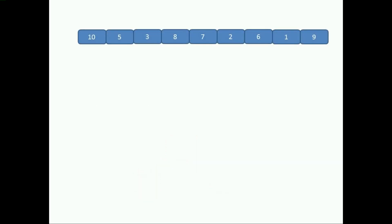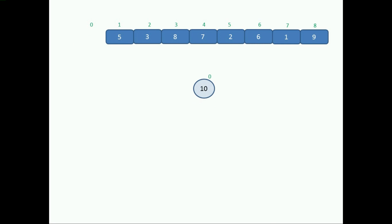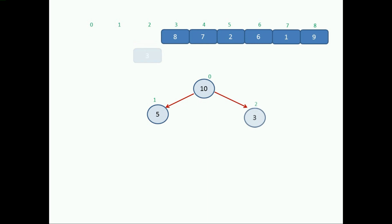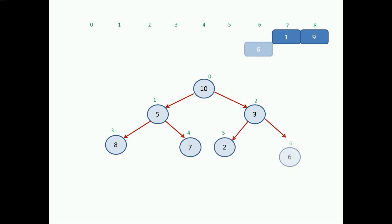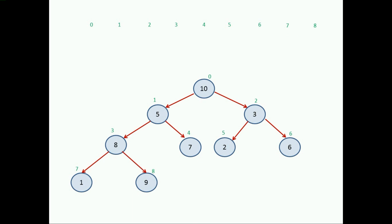I am taking an example with nine elements in unsorted order, and we are going to sort it using the heap sorting method. The first step is to create a heap — a tree — from our unsorted list. The first element is 10 at index position 0, then 5, then its right child 3, then 8, 7, 2, 6 at index 6, 7, and the last element at index 8 is 9. We are done creating the tree.